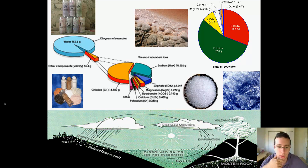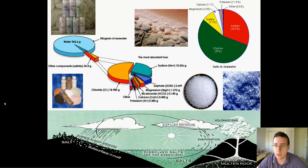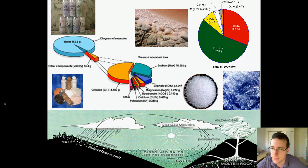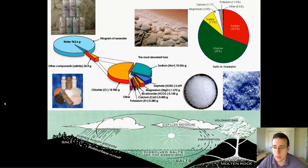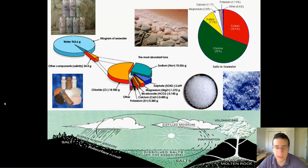What are the most common things you find dissolved in the water? Well, you will find chlorine, because table salt is so common, and you also find a lot of sodium, because it's the other component of table salt. But notice there is more chlorine than sodium, so there's a lot of free chlorine just sitting in the water as well. You also find a lot of sulfur, a lot of magnesium, a lot of calcium, and a lot of potassium in the oceans.